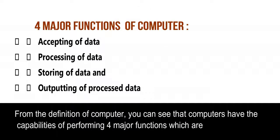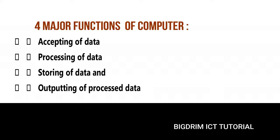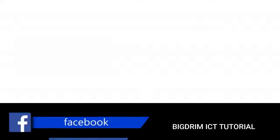From the definition of computer, you can see that computers have the capabilities of performing four major functions which are: accepting of data, processing of data, storing of data, and outputting of processed data.